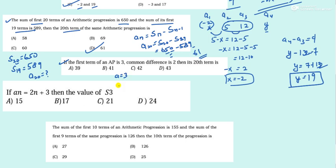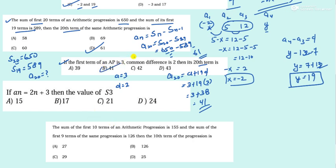Next: If the first term of an AP is 3 and common difference is 2, find the 20th term. Use a_20 = a + 19d = 3 + 19 × 2 = 3 + 38 = 41. Option B.